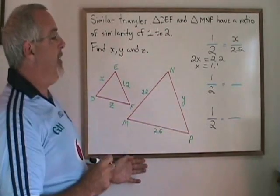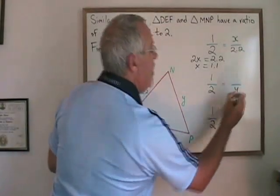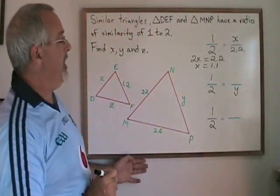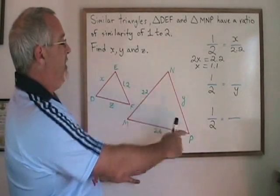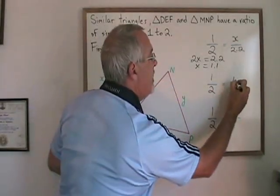When we look for Y, because Y is part of the larger triangle, I have to put the Y on the bottom with the 2. The side that is similar to side Y in the smaller is the 1.2 over here. So I put that here.